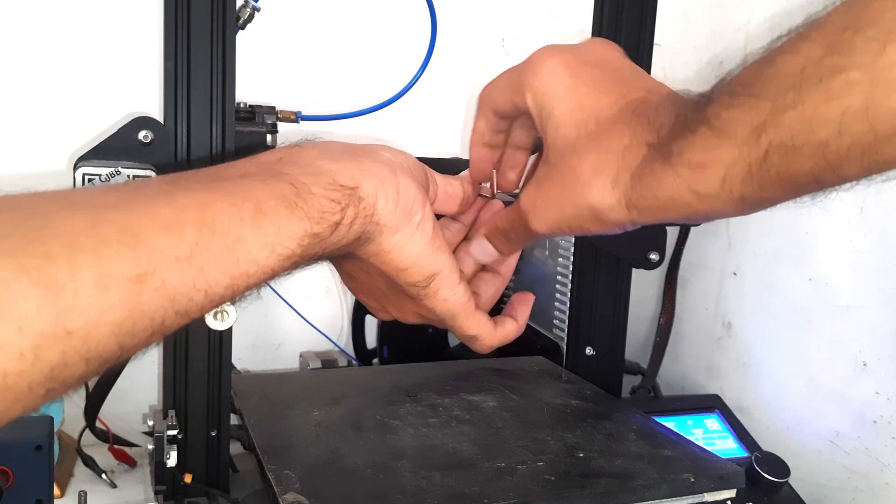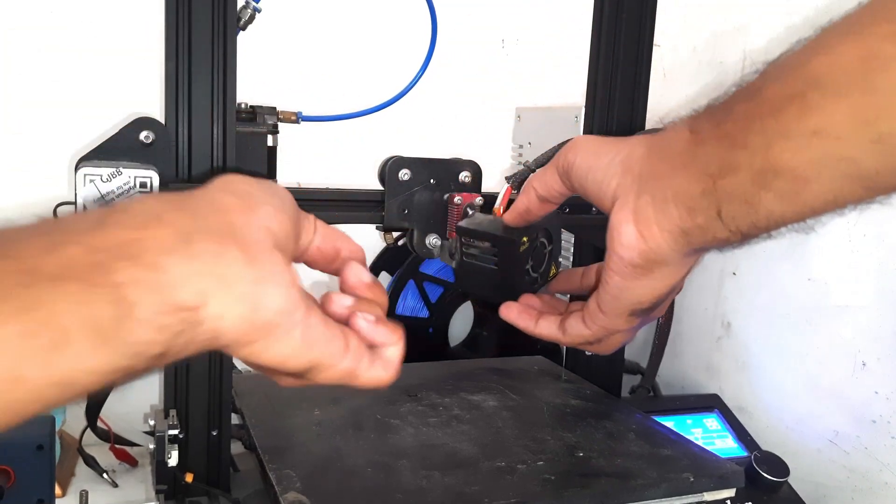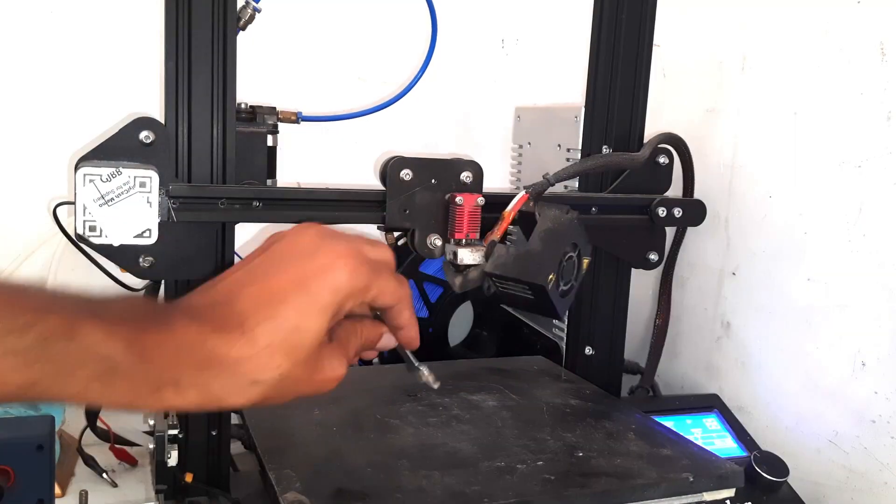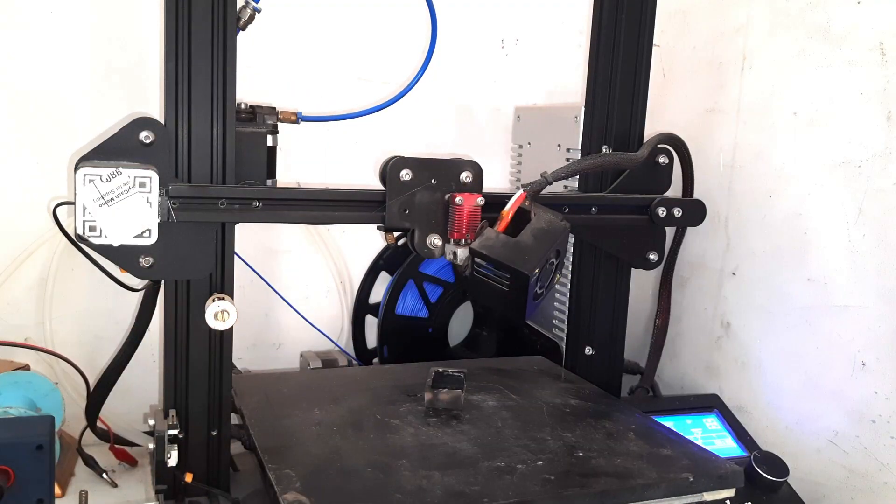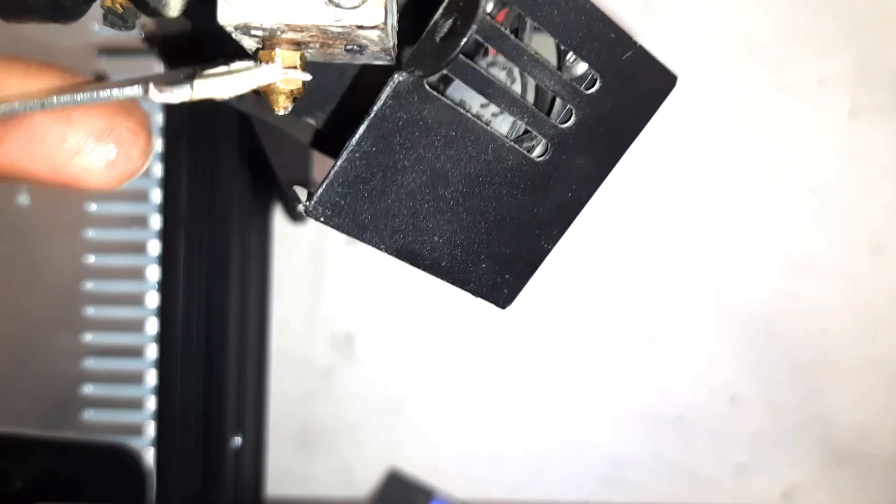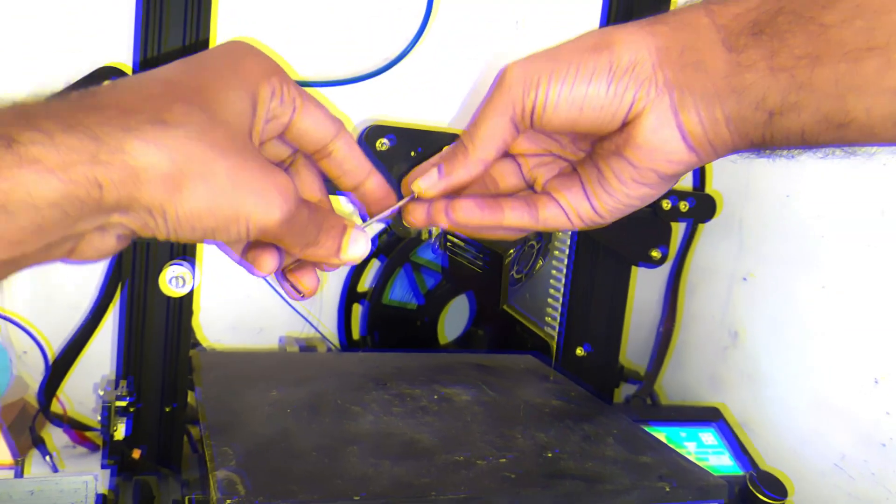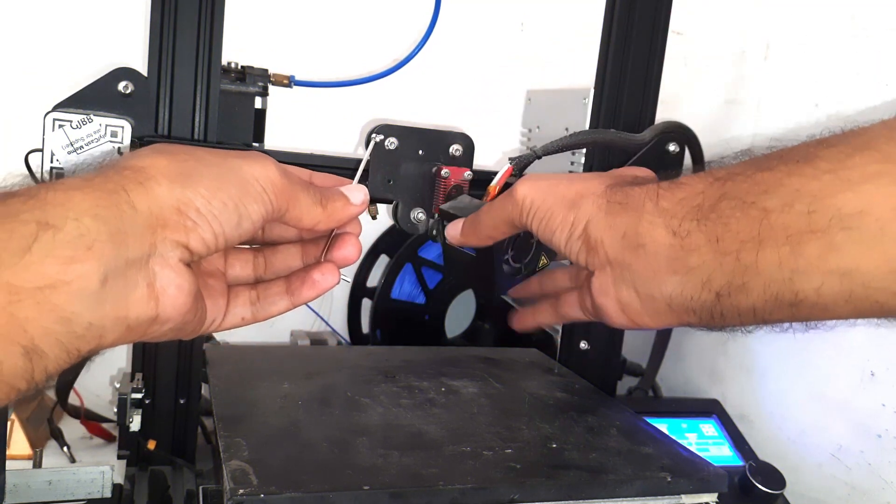We have to remove the nozzle, and before removing the nozzle must remember to heat the nozzle up to 100 degree Celsius because the harder plastic makes it difficult to remove the nozzle.